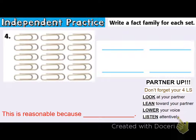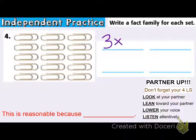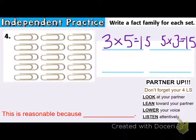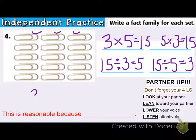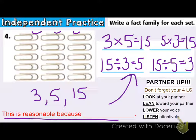Independent practice: write a fact family for each set. I need to figure out what number the fact family is describing — what is my total? Looking at the paper clips, I have three groups. One, two, three, four, five — so I have three groups of five. Three times five is 15; there are 15 paper clips. I can also write it as five times three is 15. The inverse is division, so part of the fact family is: 15 divided by three groups gives five in each group. Or 15 divided by five groups gives three. So three, five, and 15 are all part of a family.